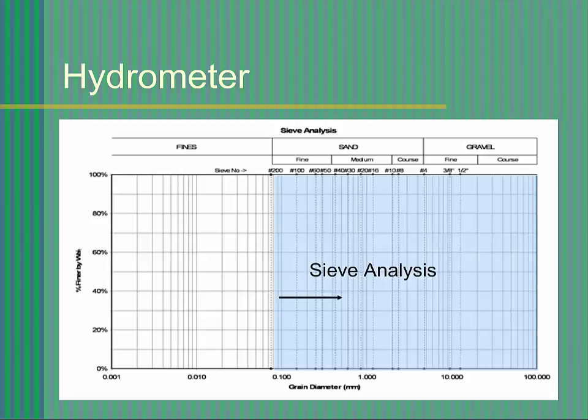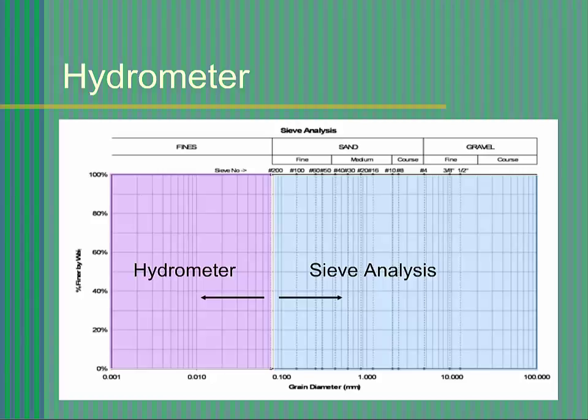Although sieve analysis works well for particles larger than a number 200 sieve, it does not work at all for particles smaller than a number 200 sieve. For the finer clay and silt particles, the hydrometer test is a better test.